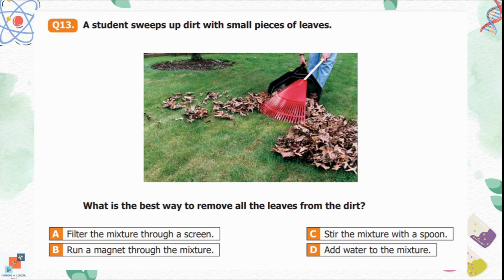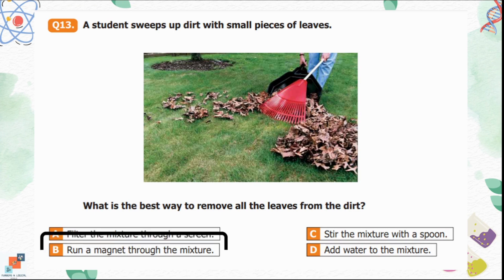Question number 13: A student sweeps up dirt with small pieces of leaves. What is the best way to remove all the leaves from the dirt? Option A is filter the mixture through a screen — dirt particles are tiny and pass through the screen, while the larger leaves remain on top, effectively separating them. Option B is run a magnet through the mixture — neither dirt nor leaves are attracted to a magnet. Option C is stir with a spoon — makes no difference. Option D is add water — not helpful. Option A is the correct option.